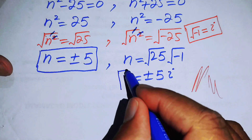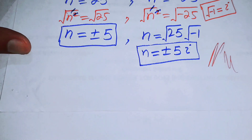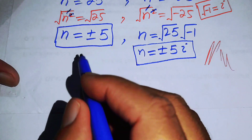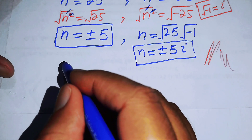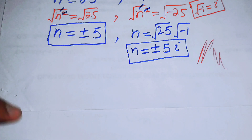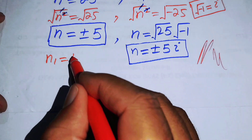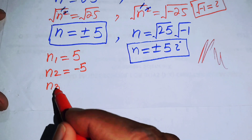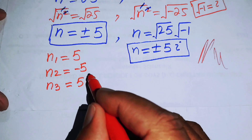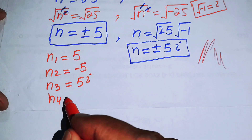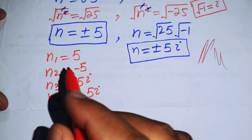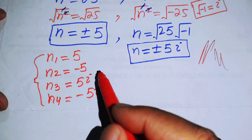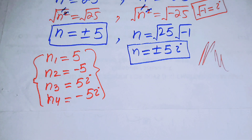These are the other two complex roots of the given problem. Finally, the four roots are: n₁ equals 5, n₂ equals minus 5, n₃ equals 5 iota, and n₄ equals minus 5 iota. These are the four roots of the given problem and this is our final answer. Thank you so much for watching — please subscribe to my channel for more exciting videos.